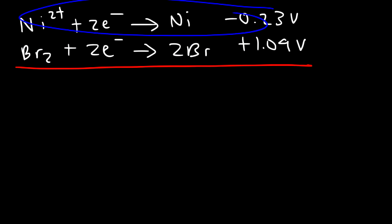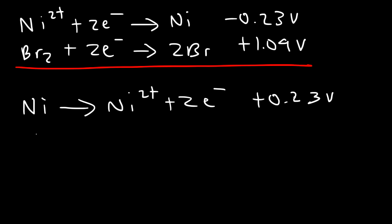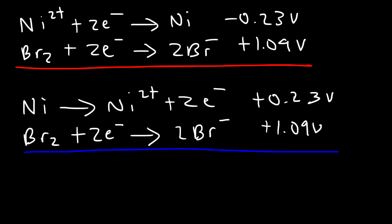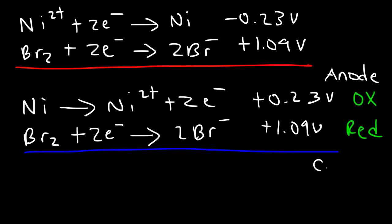Reversing the first reaction gives nickel turning into the Ni 2+ cation, and the cell potential changes from negative to positive 0.76 V. We keep the second reaction as written. Whenever electrons are on the right side it's an oxidation reaction (anode); on the left side it's a reduction reaction (cathode). Oxidation always occurs at the anode and reduction always occurs at the cathode, so nickel is the anode.